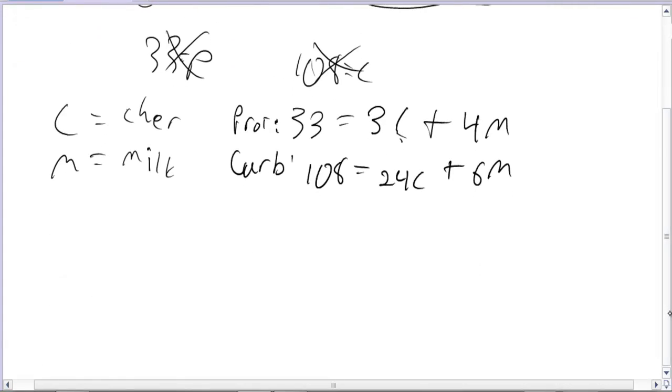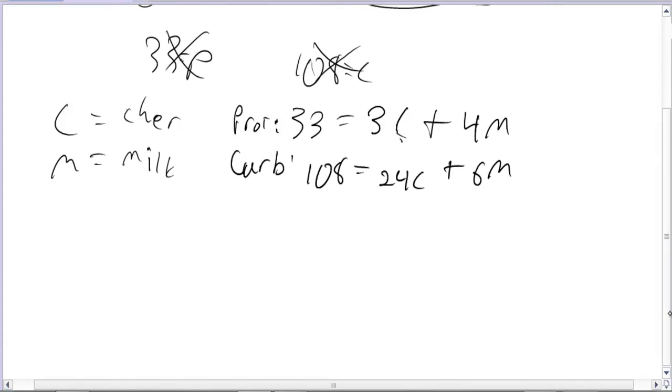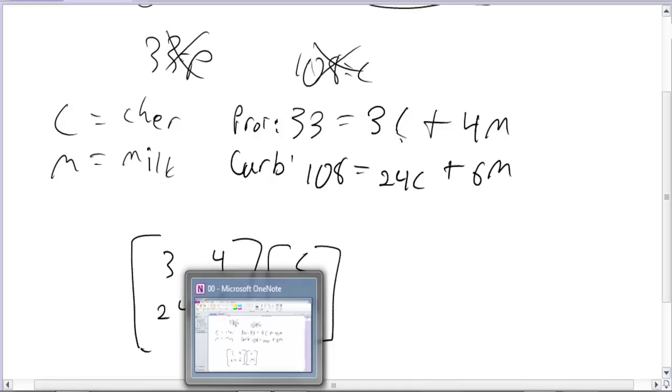So now, to set this up, setting it up in our new form, I would say the coefficients would be 3, 4, 24, 6, and our variables would be Cheerios and milk. How much of each of those should I eat?